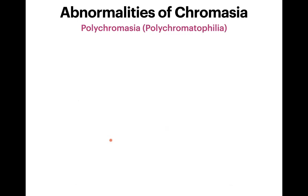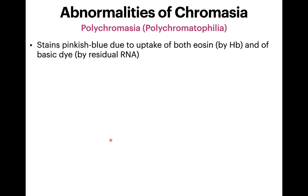Another abnormality of chromasia is polychromasia. The ICSH recommends these cells be referred to as polychromatophilic cells. They stain pinkish-blue because 'poly' means multiple colors. This is due to uptake of both components of the Romanowsky stain: eosin stains hemoglobin, and the basic dye stains residual RNA still present in these young cells.